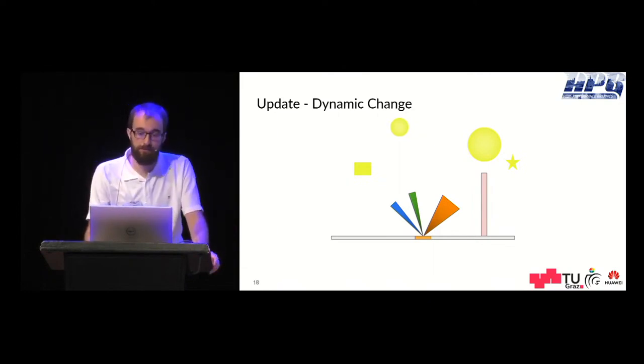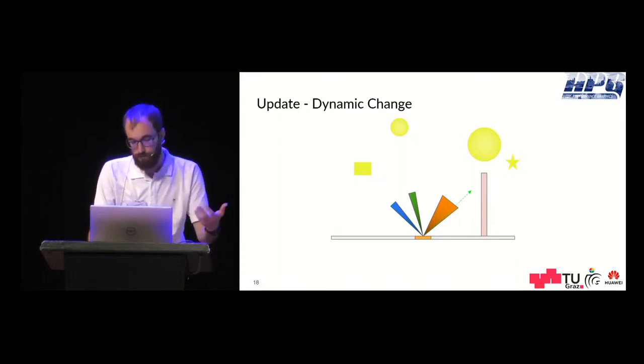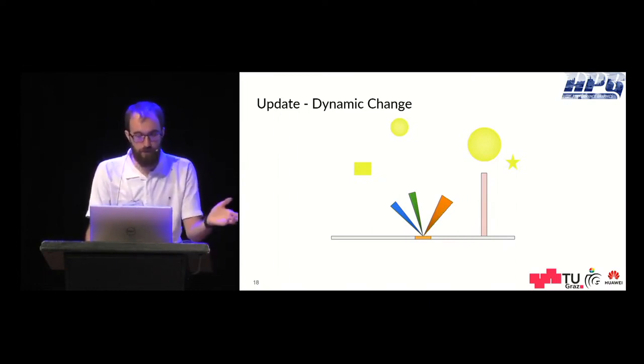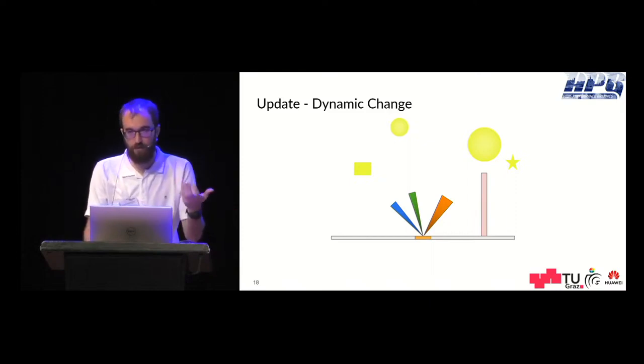Therefore we also sample the cones at the borders, some epsilon away from the borders, and if this sample doesn't hit a light source then we shrink the cones. We continue this a few times until we have the right representation again. Usually dynamic changes happen slowly so we don't need that many samples to adapt the cones.